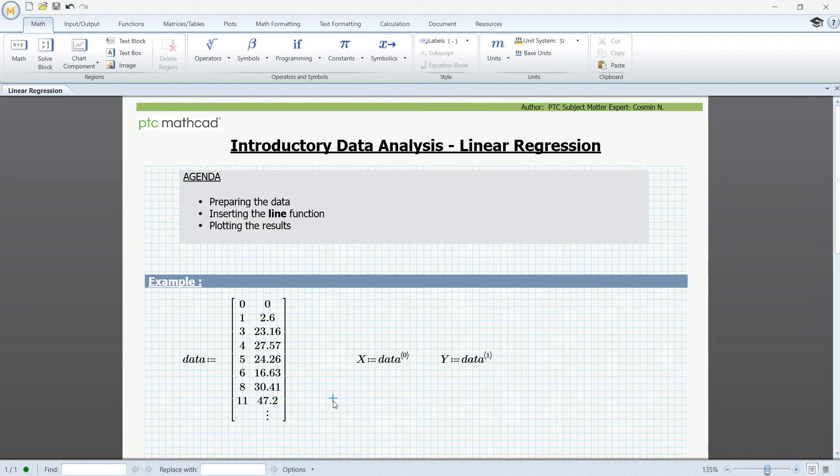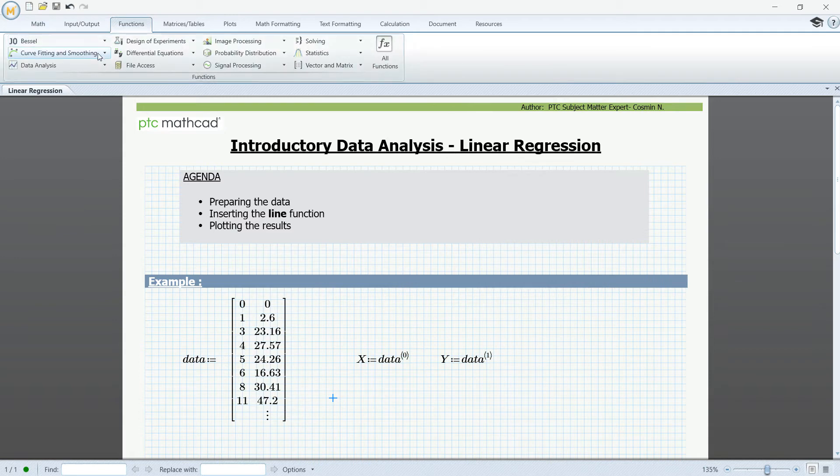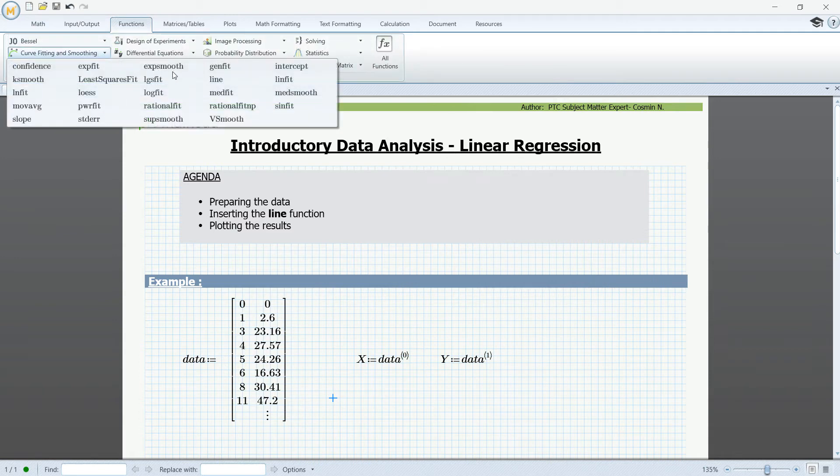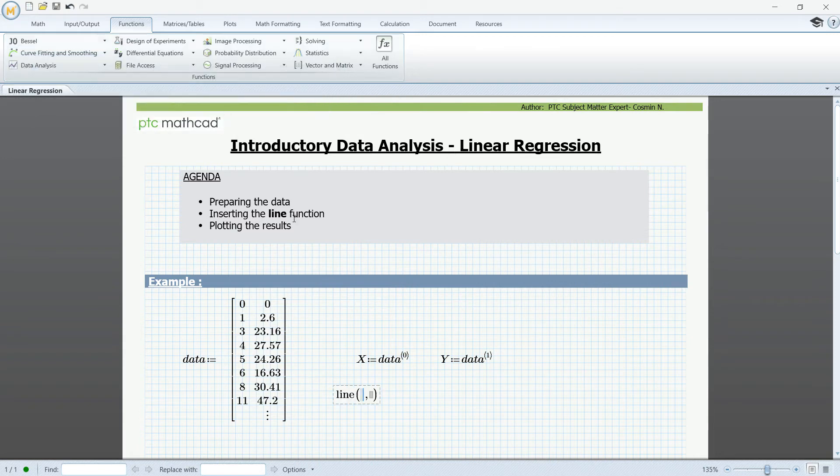The next step is to insert the line function that can be found on the Functions tab. Under Curve Fitting and Smoothing, we have the line function. This can be inserted by clicking here on the line function name, or you can type in the function directly from the keyboard.